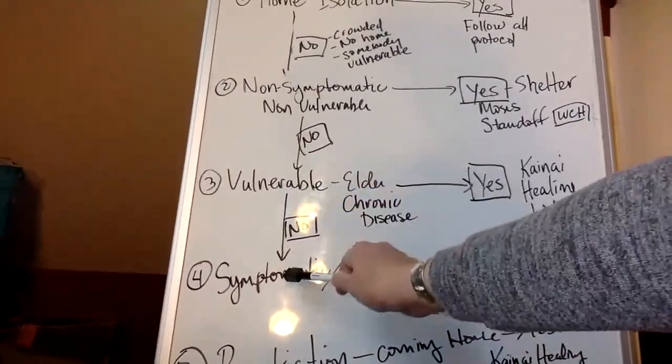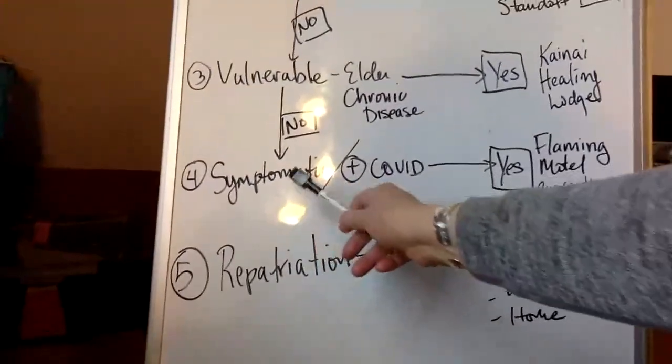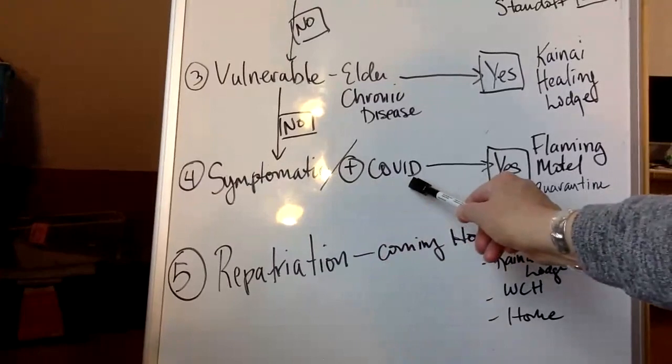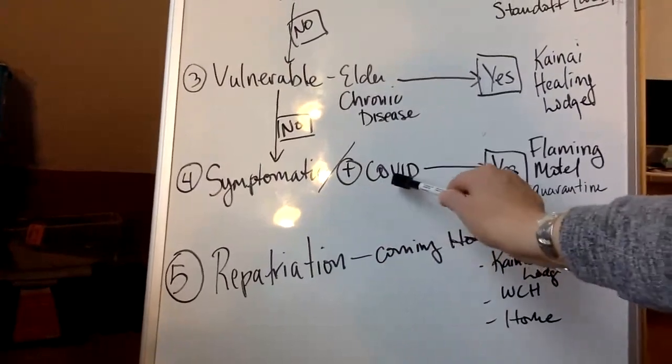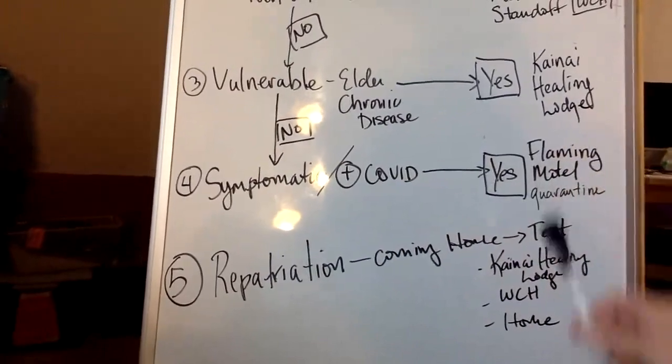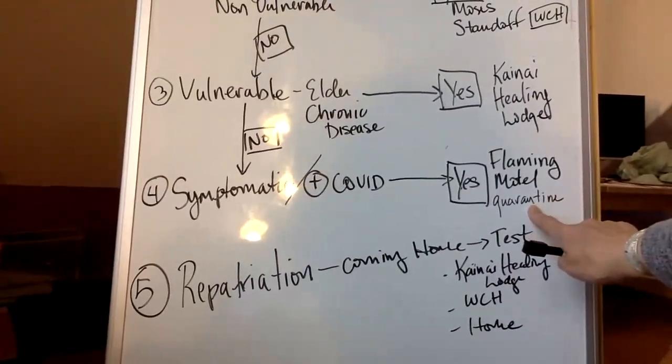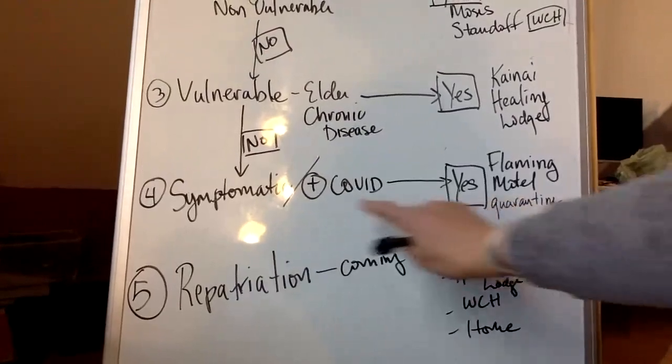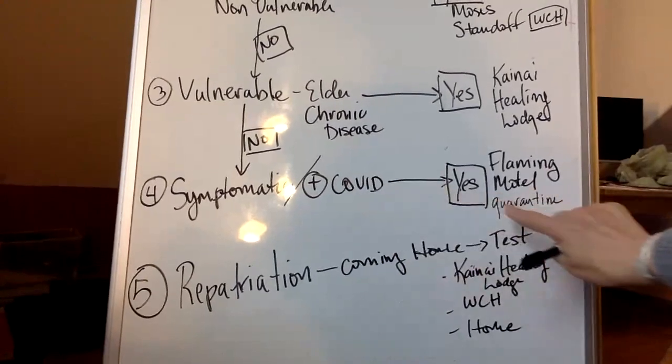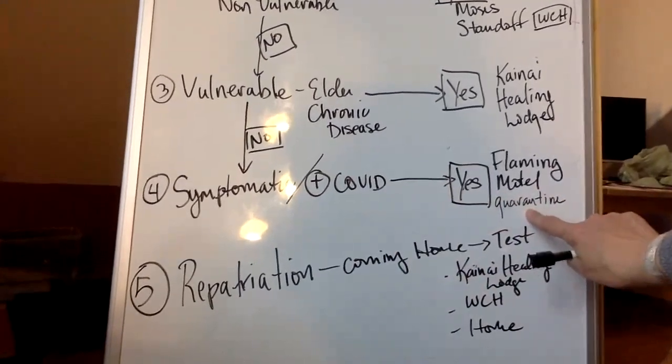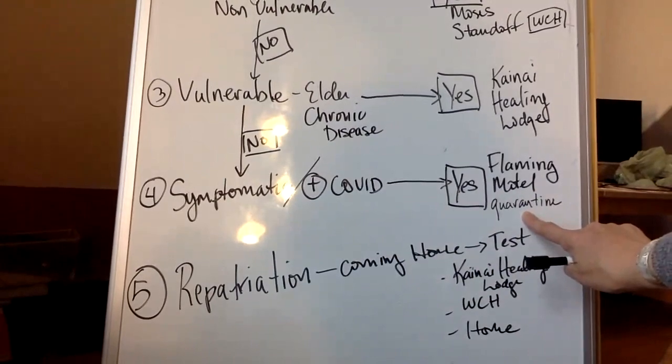So if they're not vulnerable, no, the next thing is those that are symptomatic or have a positive COVID test and cannot isolate within a home. So we have established the Flamingo Motel for quarantine. So we have a place for our people to go who are symptomatic, who may have a positive COVID and we have staff who are manning the Flamingo Hotel and supporting the people that need to be in there.